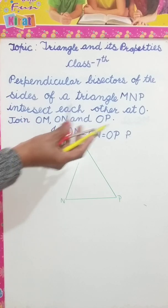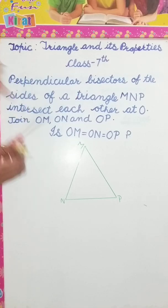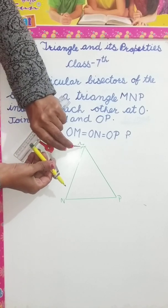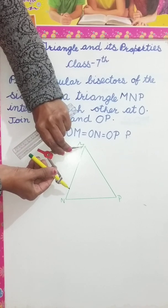Now, perpendicular bisector of the sides. We have to draw a perpendicular bisector of all the sides. To draw a perpendicular bisector of the sides, we have to measure our compass more than half of that side.